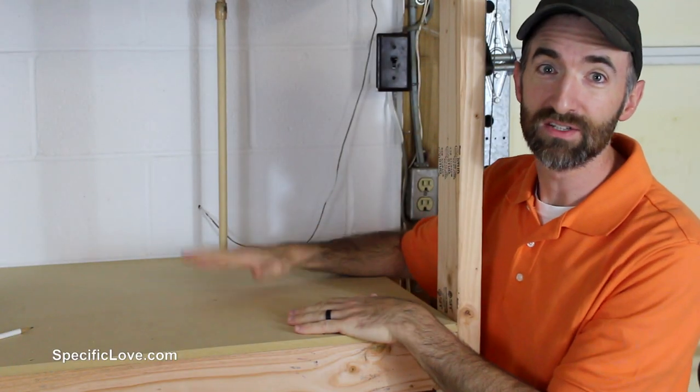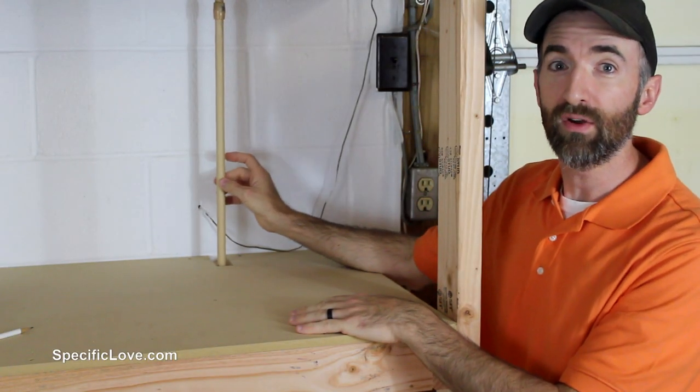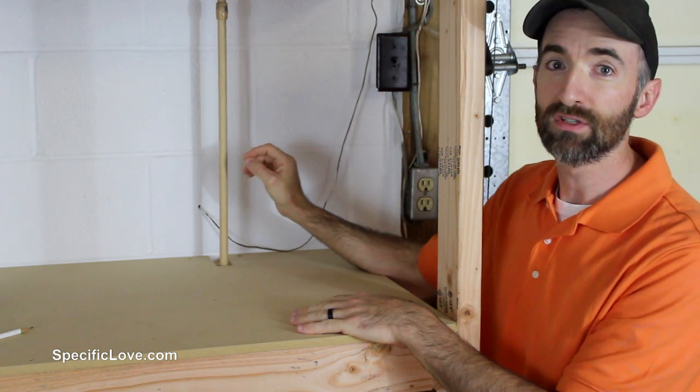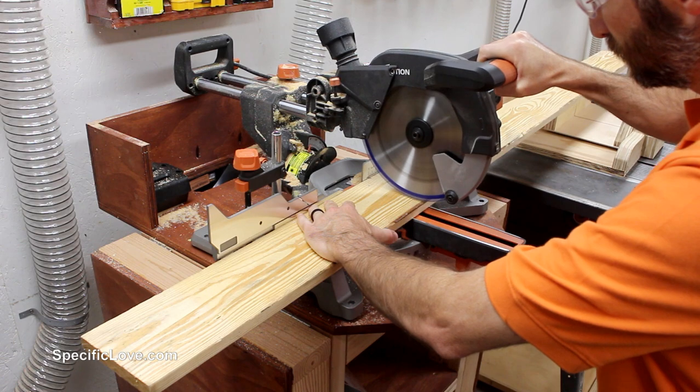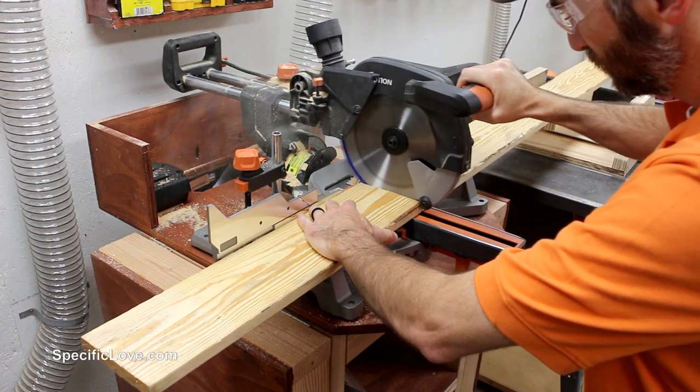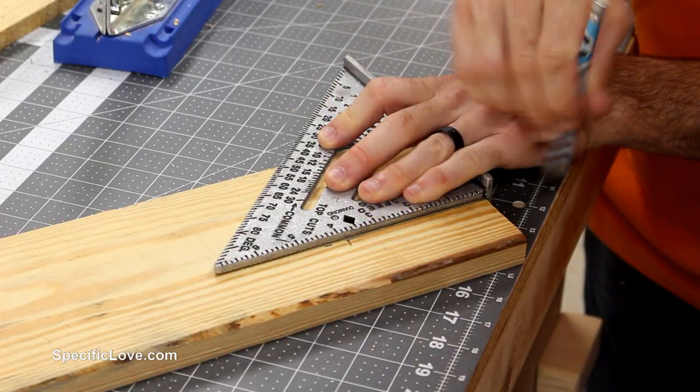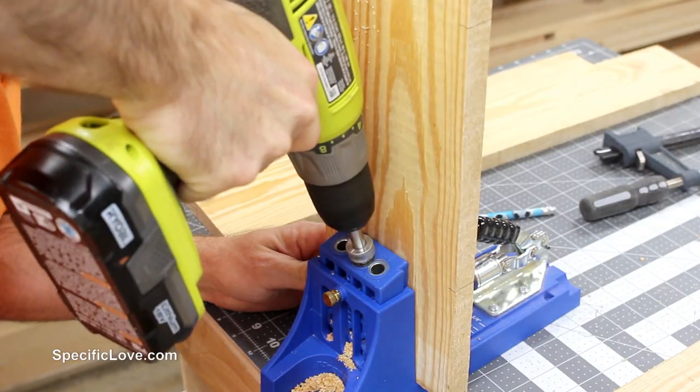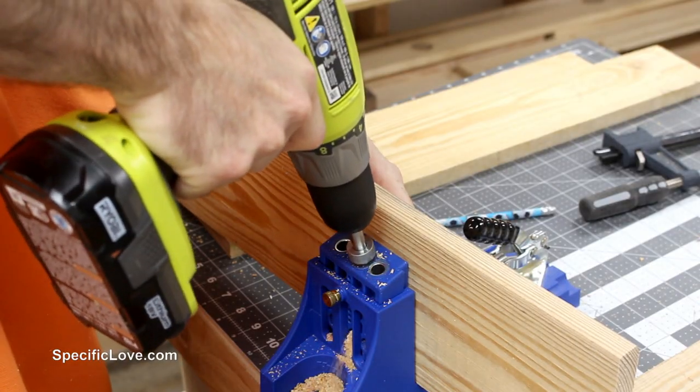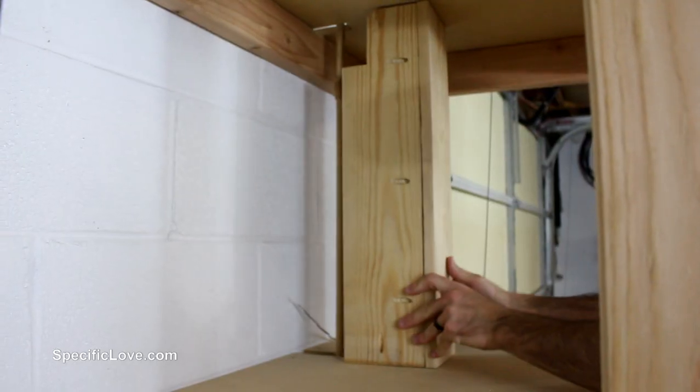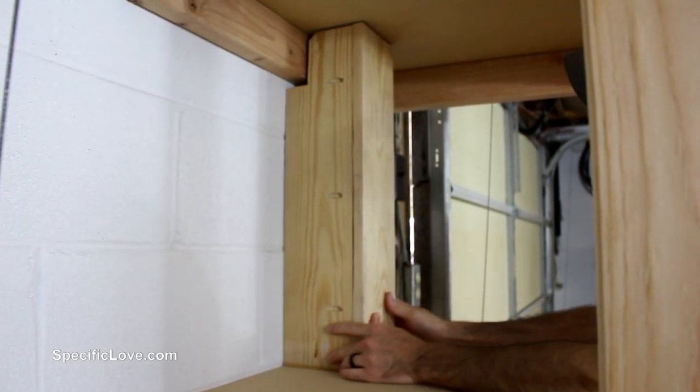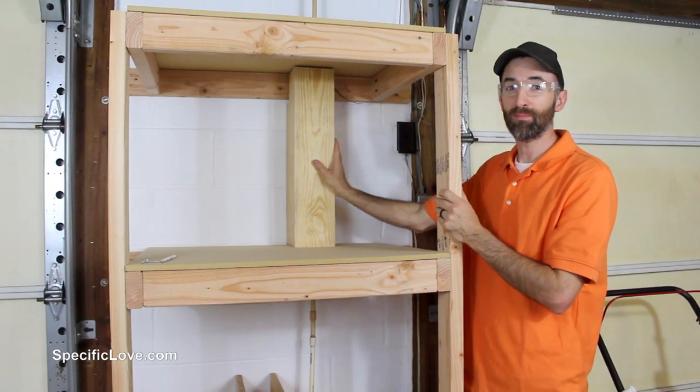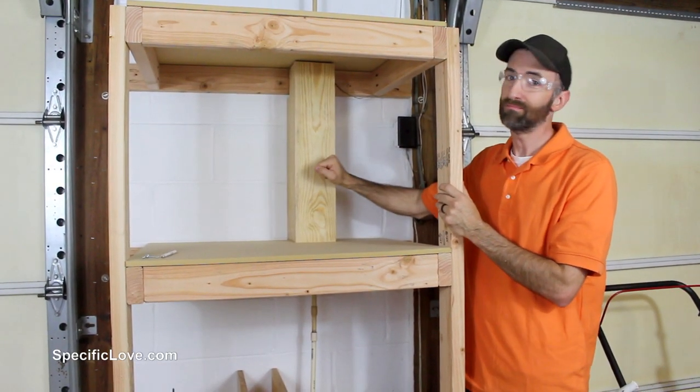Now that we have all the shelves in place and screwed down, I want to create a little barrier, a little border that goes around this pipe. And I'm going to do that using some one-by material I got off an old crate. Now that we've got one in place, it seems like it's going to work pretty good. Three more to go.